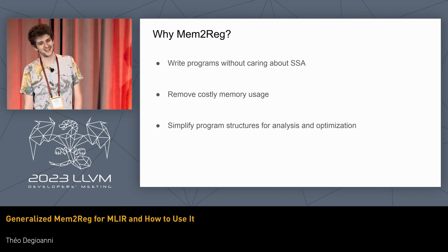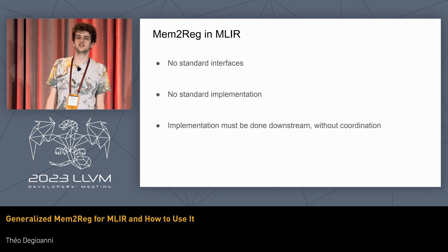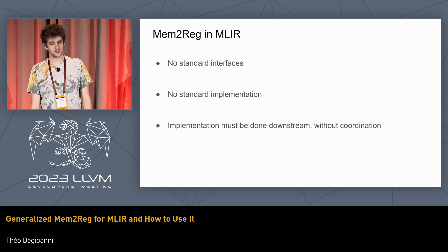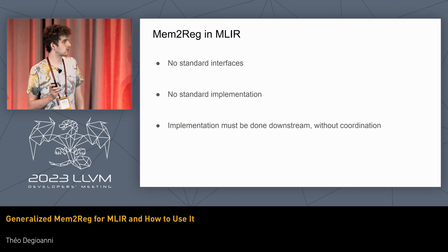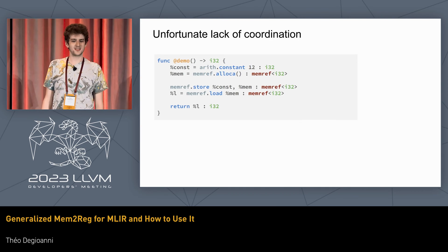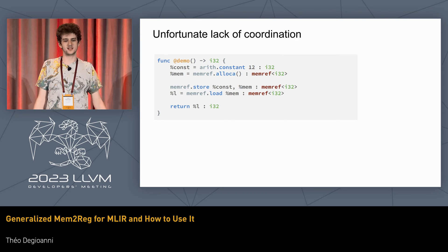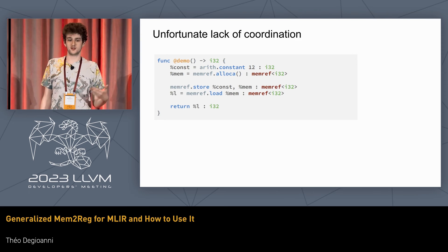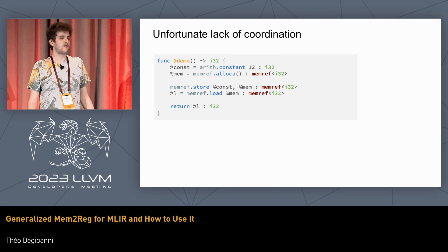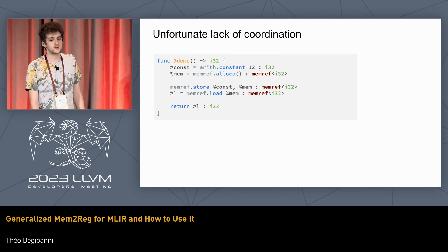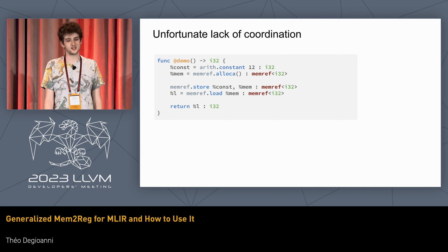So how is it in MLIR? Well, there is no standard interface and no standard implementation. Typically if you want to use Mem2Reg, you have to implement it yourself downstream, and there is no coordination between implementations. That's actually unfortunate — for example, we have the memref dialect to represent references to memory, basically the same as what we saw earlier. If memref would provide a Mem2Reg implementation, it could clearly reduce a store of a constant followed by a load of that constant into just returning that constant.